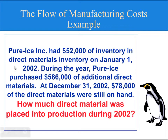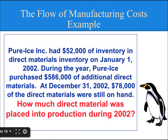Let's see an example to understand more. Pure Eyes Inc. had $52,000 of Direct Material Inventory on January 1, 2002. During the year, Pure Eyes purchased $586,000 of additional Direct Materials. At December 31, 2002, $78,000 of Direct Material is still on hand. How much Direct Material was placed into production during 2002?